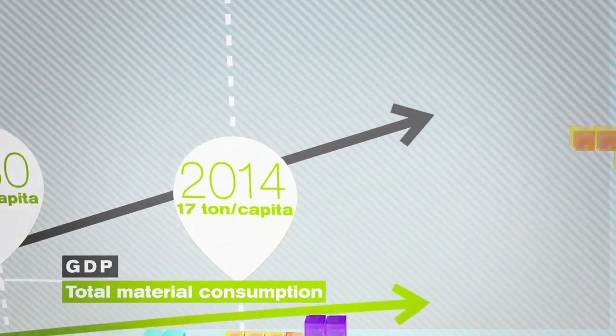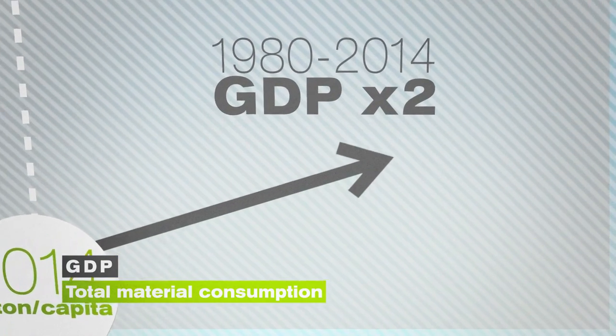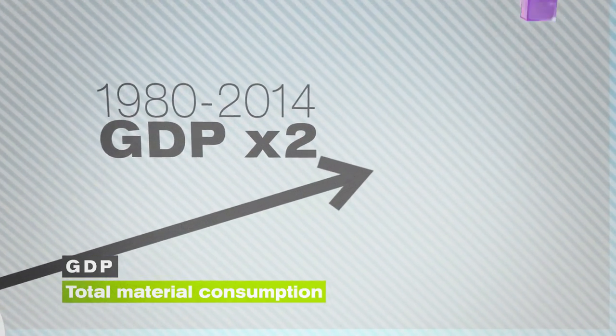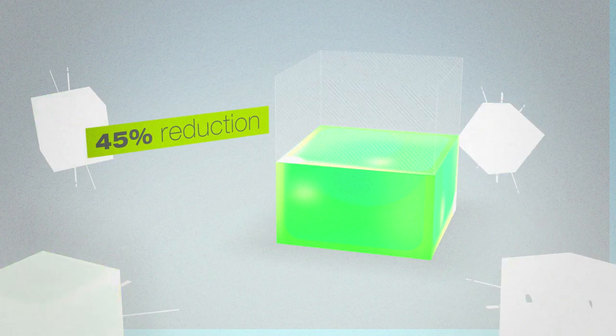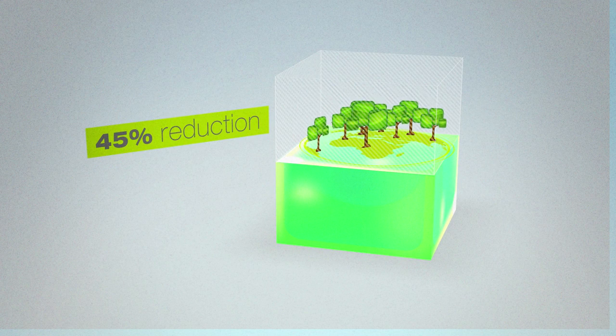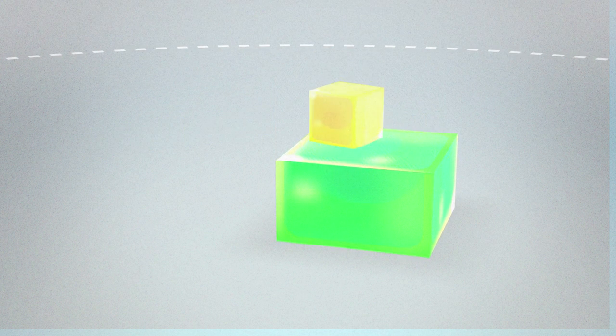That may sound like very slight progress, but over the same period, economic output has doubled. We use 45% less material for each unit of economic output. A real improvement in resource productivity.